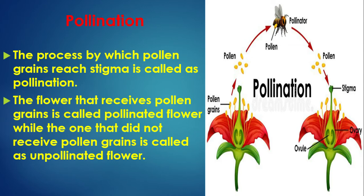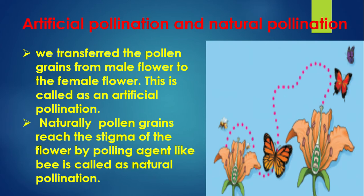Pollination: The process by which pollen grains reach the stigma is called pollination. The flower that receives pollen grains is called a pollinated flower, while one that did not receive pollen grains is called an unpollinated flower. Artificial pollination: we transfer the pollen grains from a male flower to the female flower manually. Natural pollination: pollen grains reach the stigma of flowers naturally by a pollinating agent like bees.